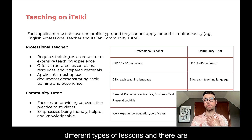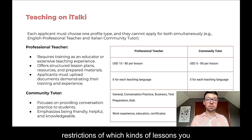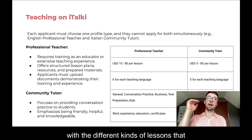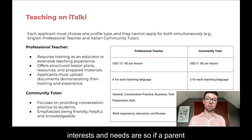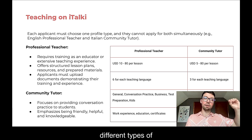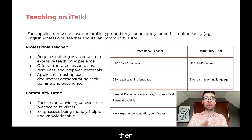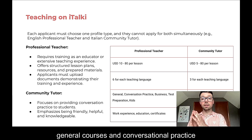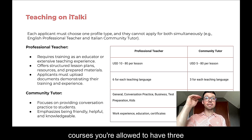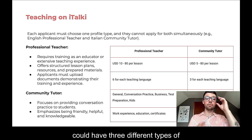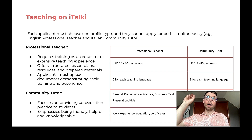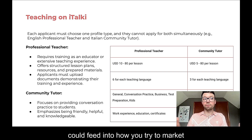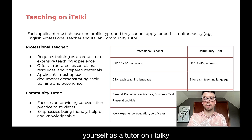As a community tutor, you can only have three different types of lessons, and there are restrictions on which kinds. You basically set a menu on your profile with different kinds of lessons that students can book depending on their interests and needs. For a professional teacher, you have more categories of lessons. As a community tutor, you're restricted to general courses and conversational practice courses. So you could have three different types of conversational lessons — for example, 'Talk About Tourism with Ryan' or 'Talk About Culture with Ryan' — and this can feed into how you market yourself as a tutor on iTalki.